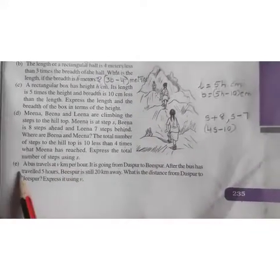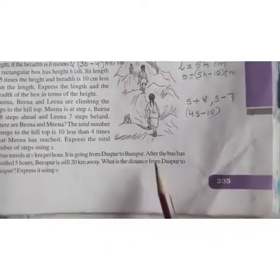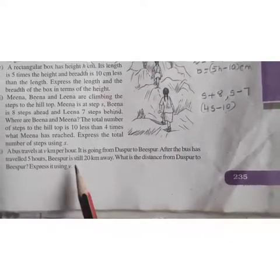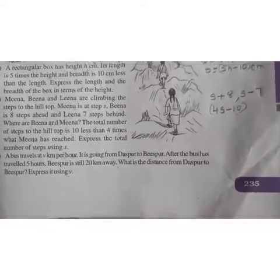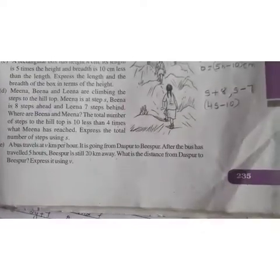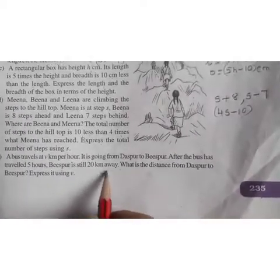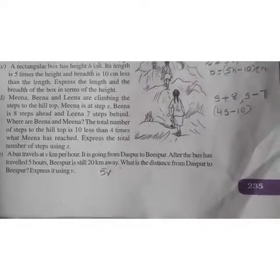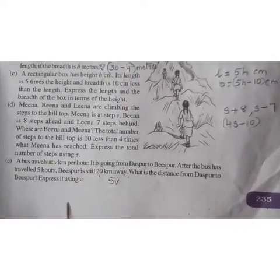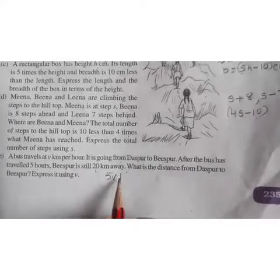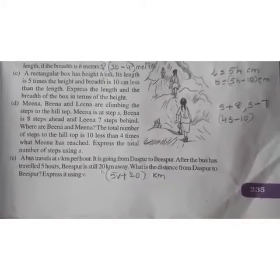Next we have question E. A bus travels at V km per hour. It is going from Daspur to Bispur. After the bus has travelled 5 hours, Bispur is still 20 km away. What is the distance from Daspur to Bispur? Express it using V. So what you have to do? Bus has already travelled 5 hours, so 5V. And still it has to move 20 km to reach the destination, that is to Bispur. So plus 20 km. So children, is it understood? Okay.